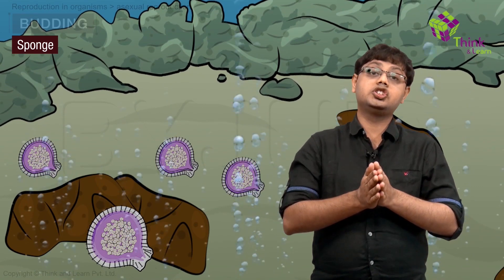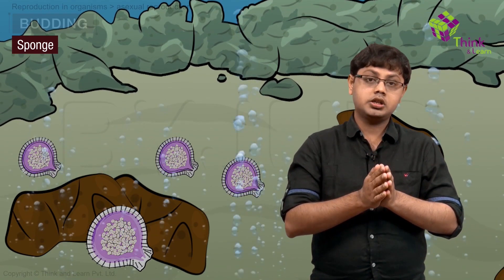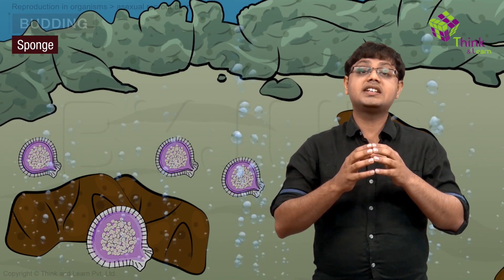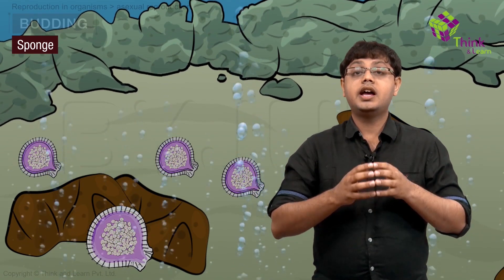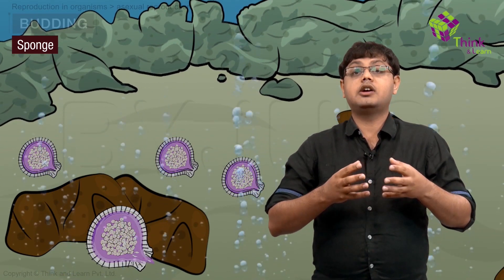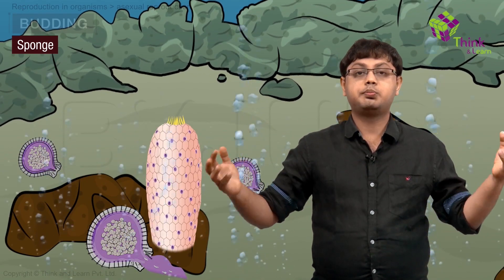When the conditions are appropriate, the cell mass inside escapes from the covering and forms a new sponge.